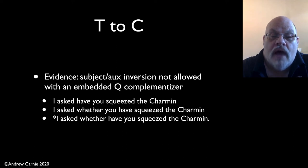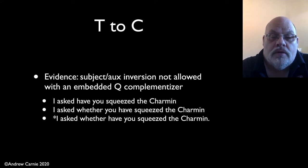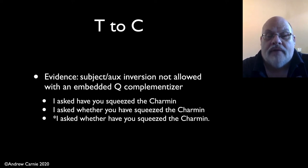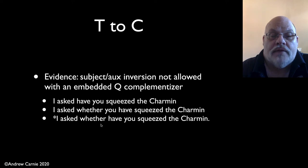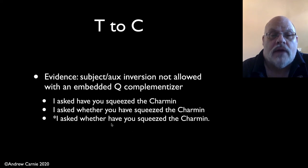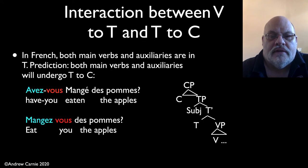If I say 'I asked whether you have squeezed the Charmin,' the subject and auxiliary have not inverted when we have the question word 'whether.' And if you do try subject-aux inversion in this context, you get an ungrammatical form: 'I asked whether have you squeezed the Charmin?' — terrible. Why? It's ungrammatical because 'whether' is occupying the position that 'have' would have to move into. So when you have an overt question complementizer in an embedded clause, you can't have subject-aux inversion. This is evidence that we're moving the T node into the C node.